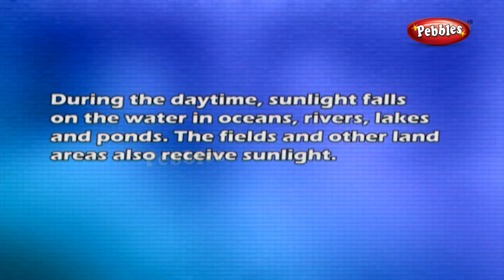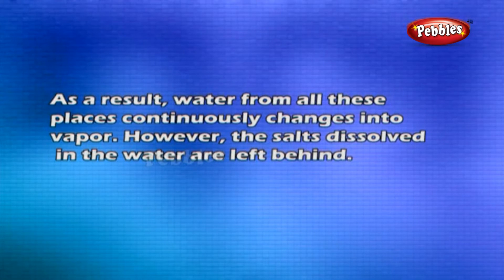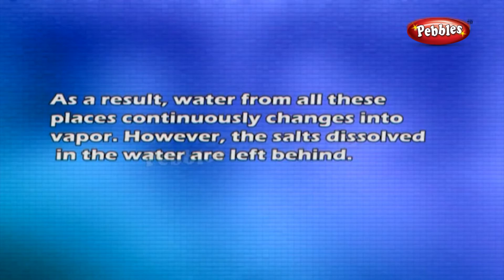During the daytime, sunlight falls on the water in oceans, rivers, lakes, and ponds. The fields and other land areas also receive sunlight. As a result, water from all these places continuously changes into vapor. However, the salts dissolved in the water are left behind.